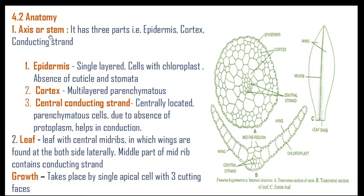When we take a transverse section through the axis (stem), it has three parts: epidermis, cortex, and conducting strand. The outermost limiting and protecting layer is the epidermis. Below that is the development of parenchymatous cells called cortex. At the center is the development of a central conducting strand, which conducts water, minerals, and food.